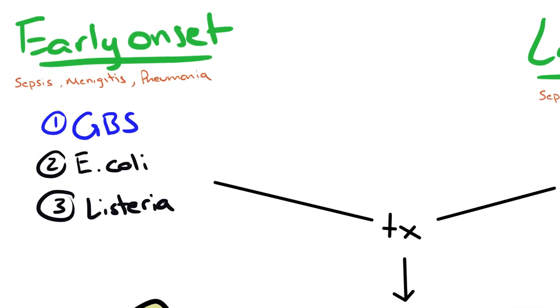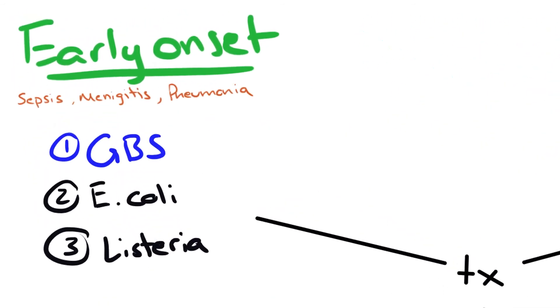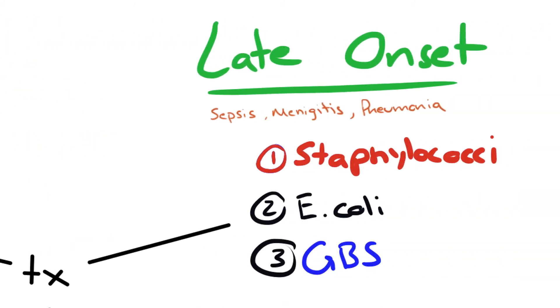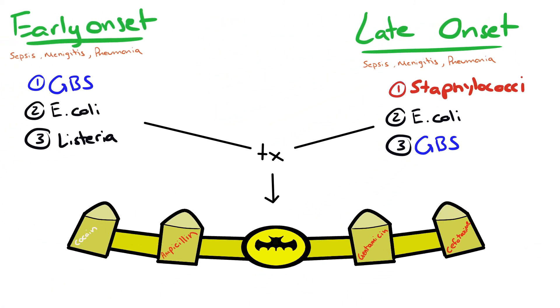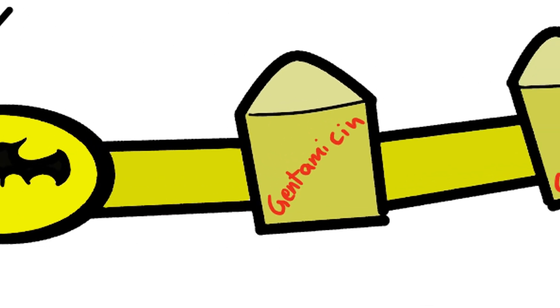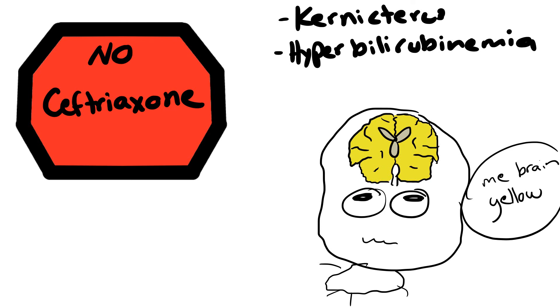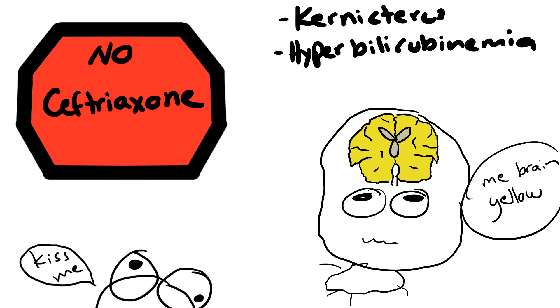The most common causes of early onset neonatal sepsis, meningitis, and pneumonia are: number one GBS, number two E. coli, and number three Listeria. For late onset, number one is Staphylococci, number two is E. coli, and number three is GBS. The empiric treatment for both early and late onset is the same: ampicillin, gentamicin, and cefotaxime. We don't use ceftriaxone because it displaces bilirubin from albumin and leads to kernicterus, aka bilirubin encephalopathy, since bilirubin is neurotoxic.